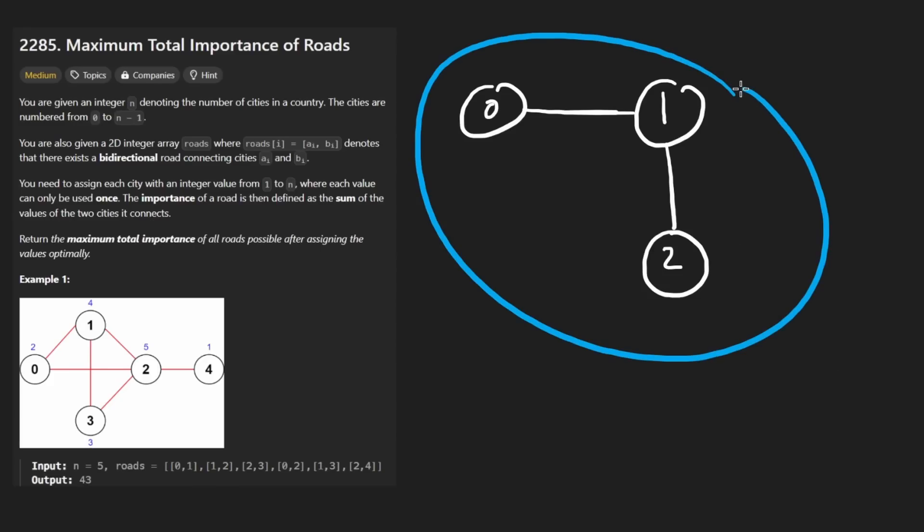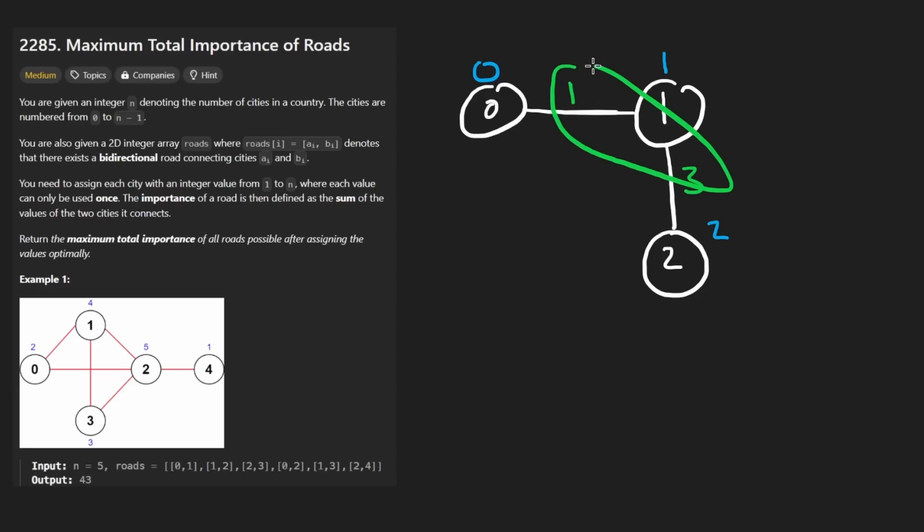Suppose we had a graph like this one. So we need to assign a number to each of these. And let's just say, for simplicity, we do 0, 1, 2. Now, we didn't have to do it this way. But let's see what the result is now. This edge is going to be 0 plus 1. It's just going to be 1. I'll make it green. This one is going to be 1 plus 2. So this one is going to be 3. So the total is going to be 4 in that case.